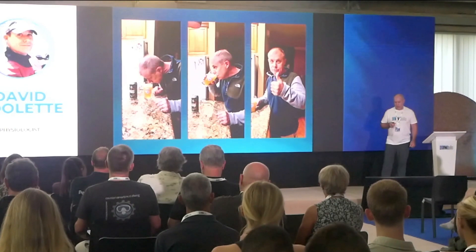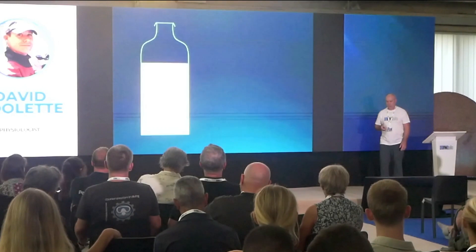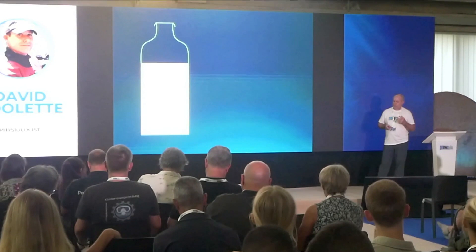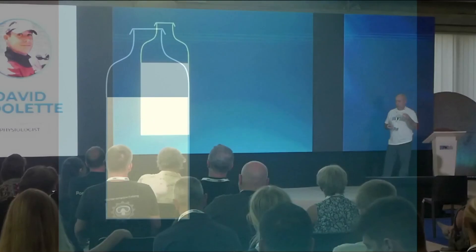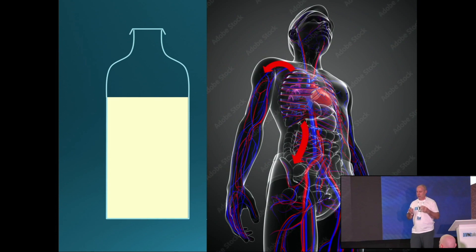I want to talk about bubble formation using a familiar situation - a bottle of beer. Everyone here who's a diver has had this analogy before. We have a capped bottle where the yellow is the liquid and the clear at the top is carbon dioxide gas under quite high pressure. As a result, carbon dioxide has been dissolved at high concentration in the liquid - this is the situation of a diver at the end of the dive.